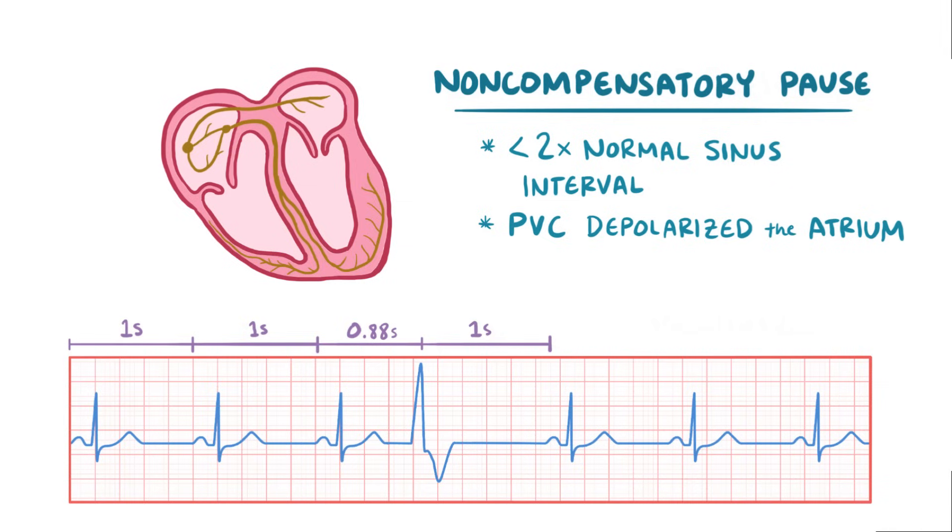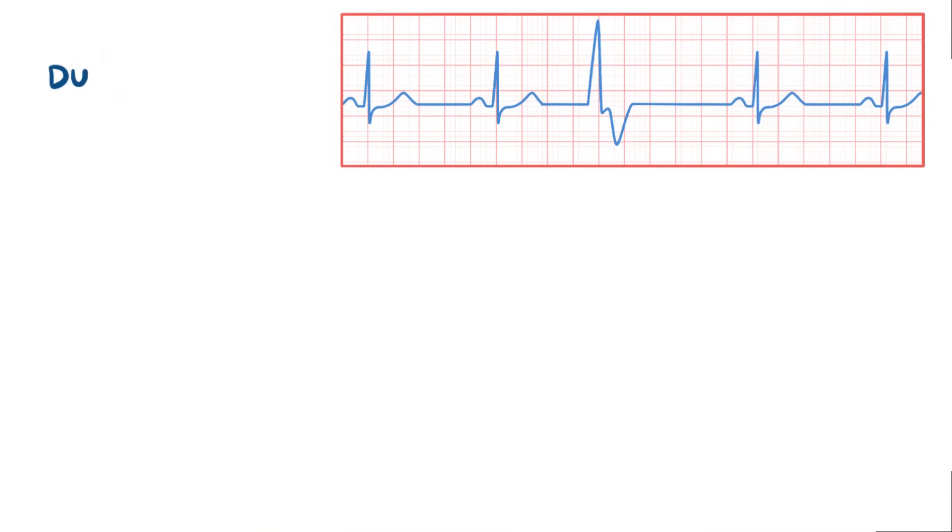A ventricular ectopic focus can fire at different points in the cardiac cycle, which we can look at using the ECG. First off, it might happen during a P wave, which can get completely lost in the QRS complex, but can sometimes be seen if you search for it.